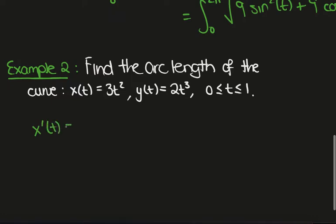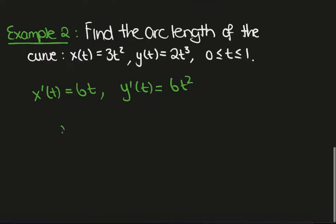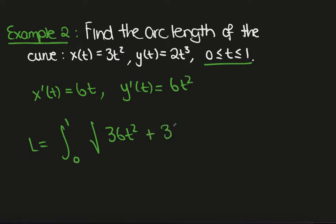So we have x'(t) equals 6t, y'(t) equals 6t², so the arc length will be the integral from 0 to 1, specified by here, the square root of 36t² plus 36t⁴ dt.